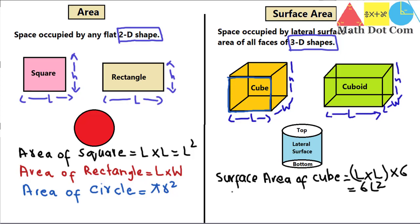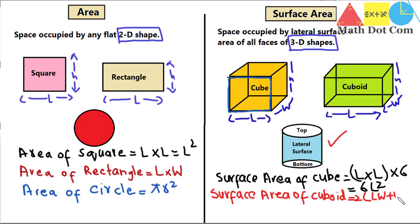Next, the surface area of a cuboid. In a cuboid, the length, width, and height are all different measurements. The formula for surface area of a cuboid is 2 times (length × width + width × height + height × length). How this formula is derived will be covered in the next lecture. Currently we are just understanding the concept of area and surface area.